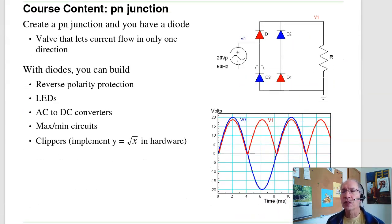Following that, we'll look at what happens if I take those two types of silicon and put them back-to-back, giving you a p-n junction. When you have a p-n junction, I get a diode. A diode is an electronic device that lets current flow in only one direction. With diodes, you can build reverse polarity protection. So if I stick my battery in backwards, I don't kill my device. I can build an LED and produce light. I can build an AC to DC converter, like this circuit, and an AC signal becomes a DC signal at the load. I can find the maximum and minimum of different voltages, and I can build clippers, such as implement y equals squared of x in hardware. So those are some of the things we'll cover with diodes.